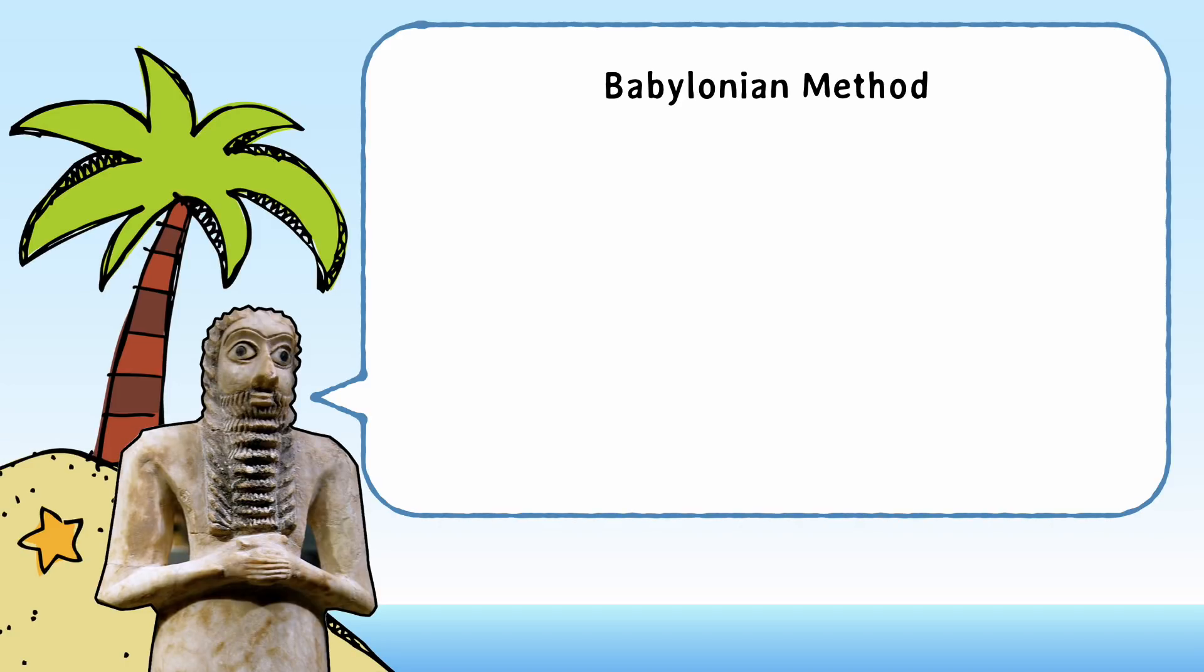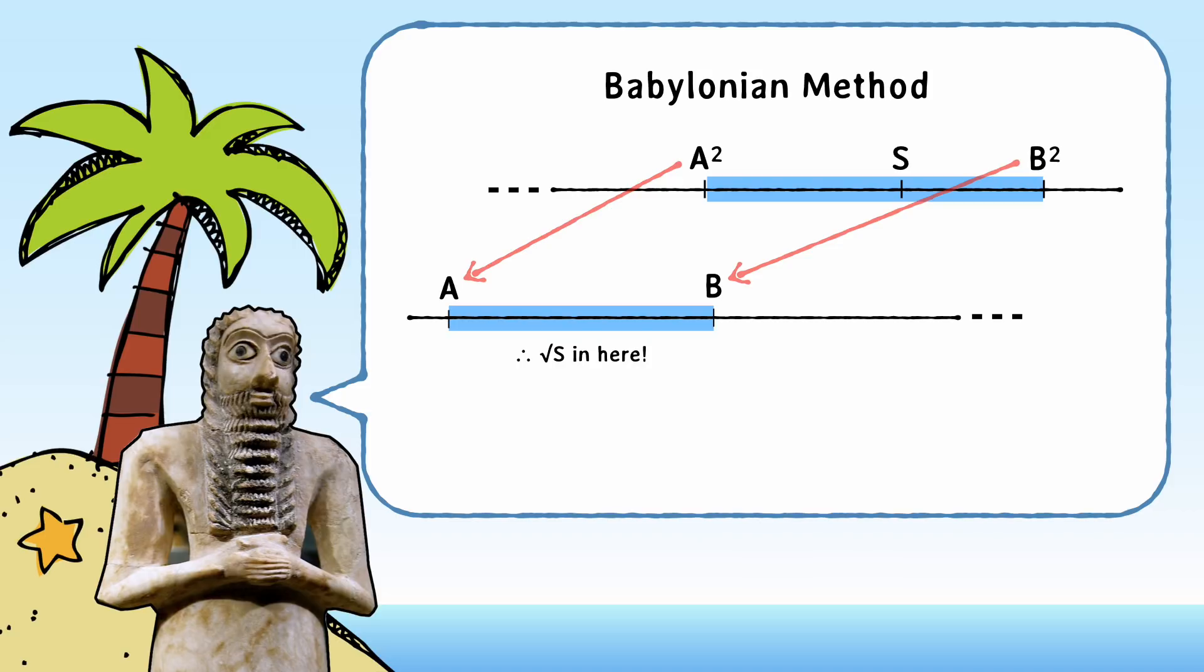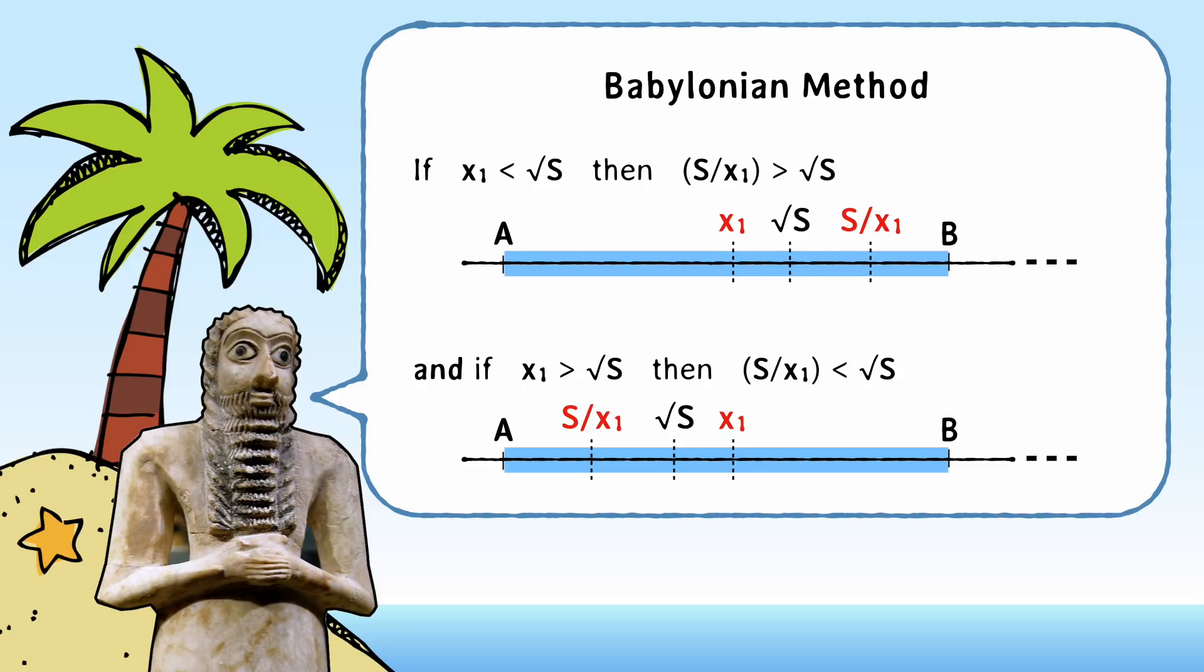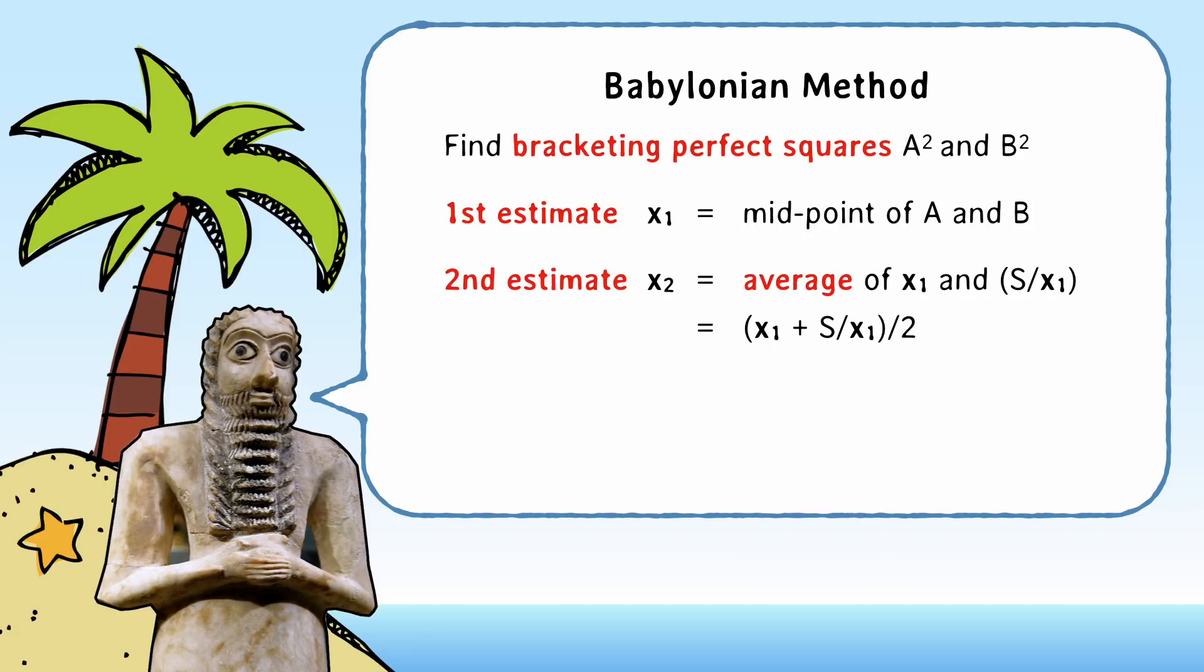Well, they start the same way as the octopus. Find a couple of bracketing perfect squares and choose halfway in between as your first estimate. But they also knew something pretty interesting. If your estimate x is lower than the true answer, then s divided by x will be higher. And the reverse is true also. So the next step is find the average of x and s over x and use that as your new estimate.